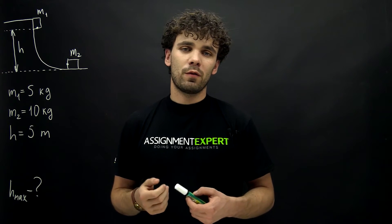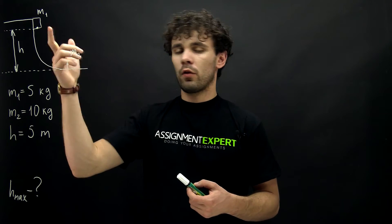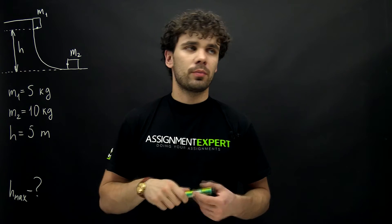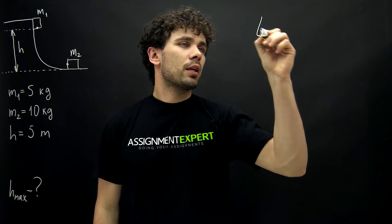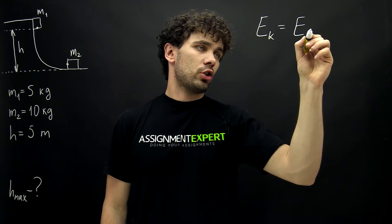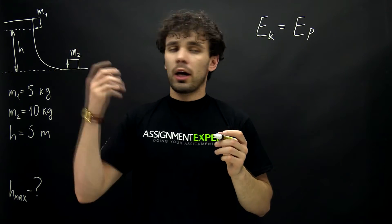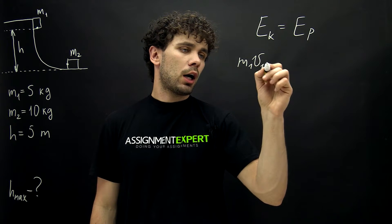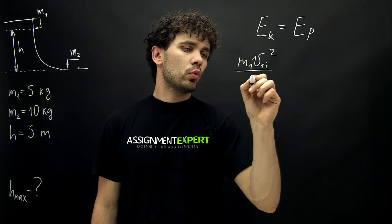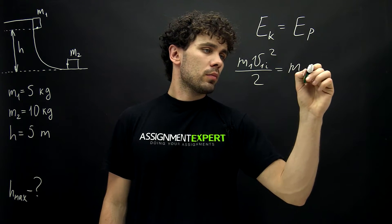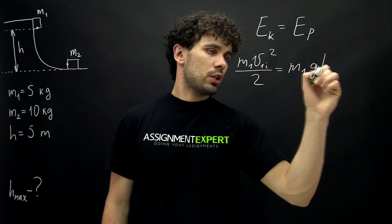First of all we need to find the initial velocity of the first block. For that we will use the law of conservation of energy. The kinetic energy is equal to the potential energy.